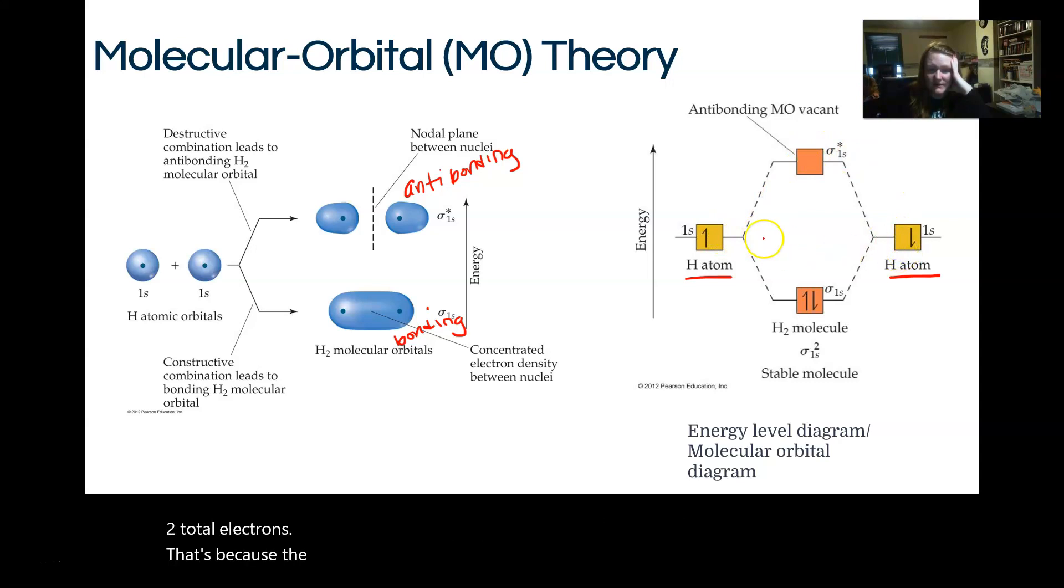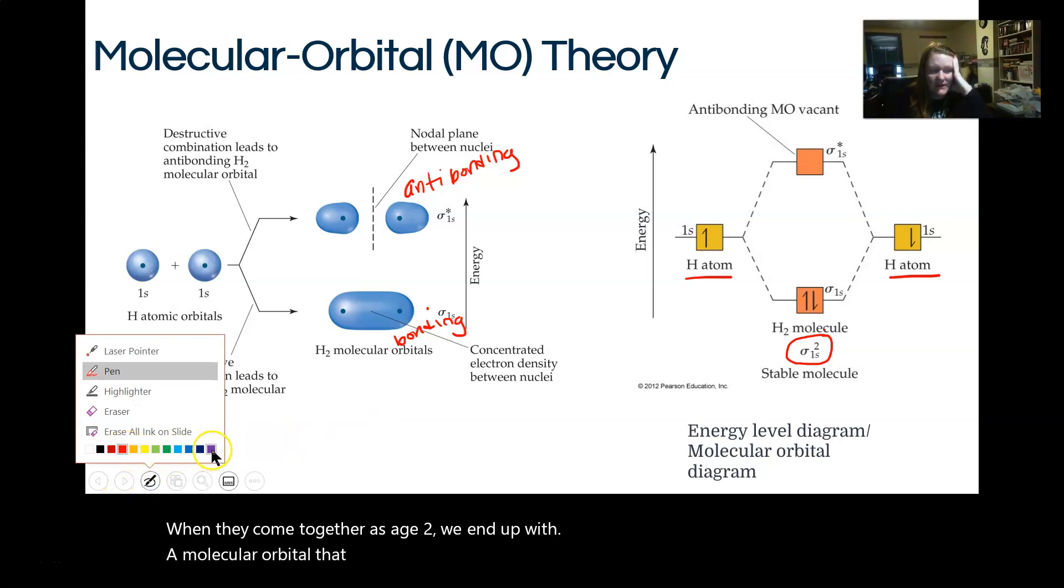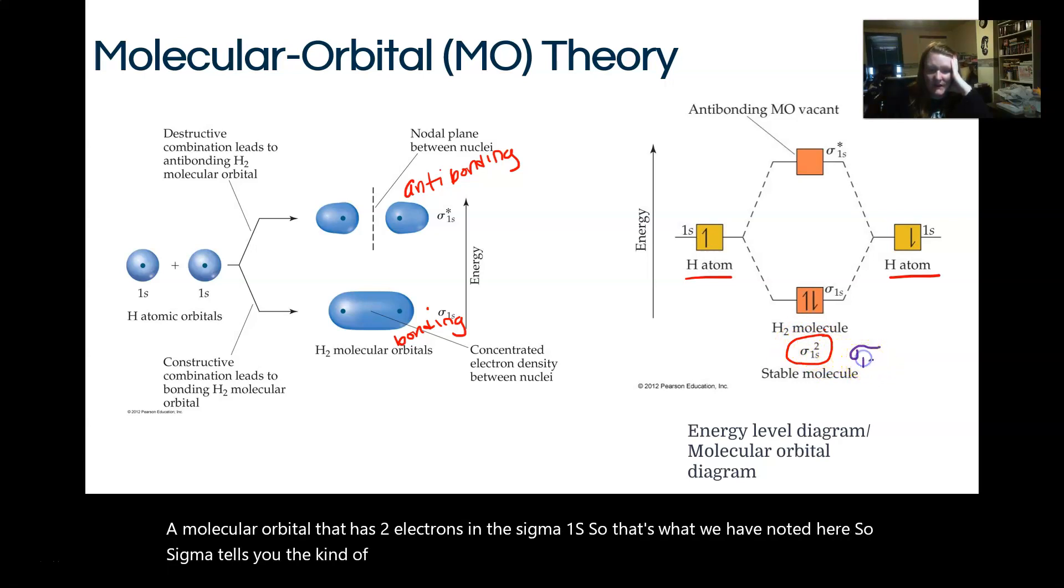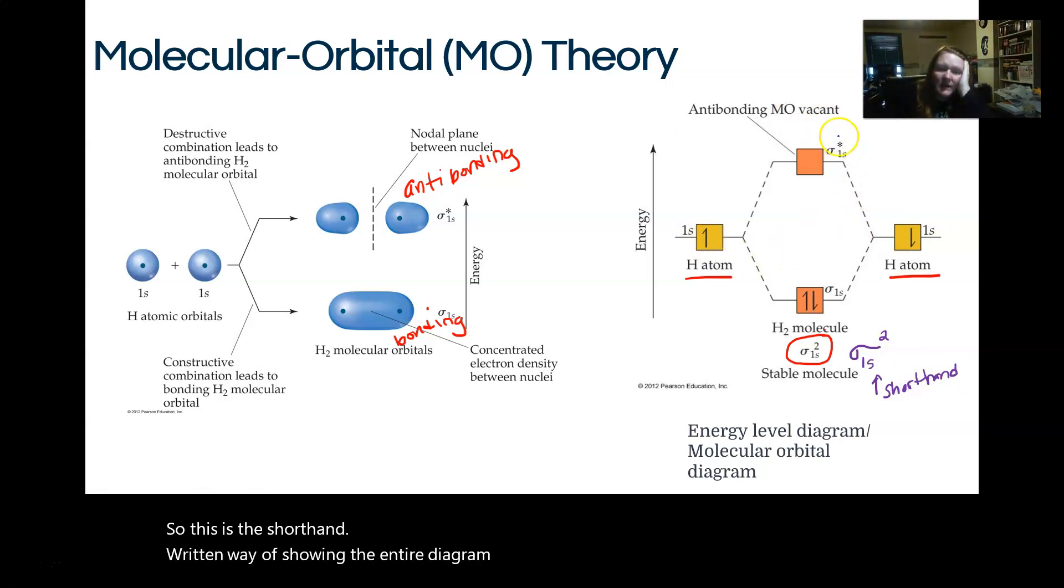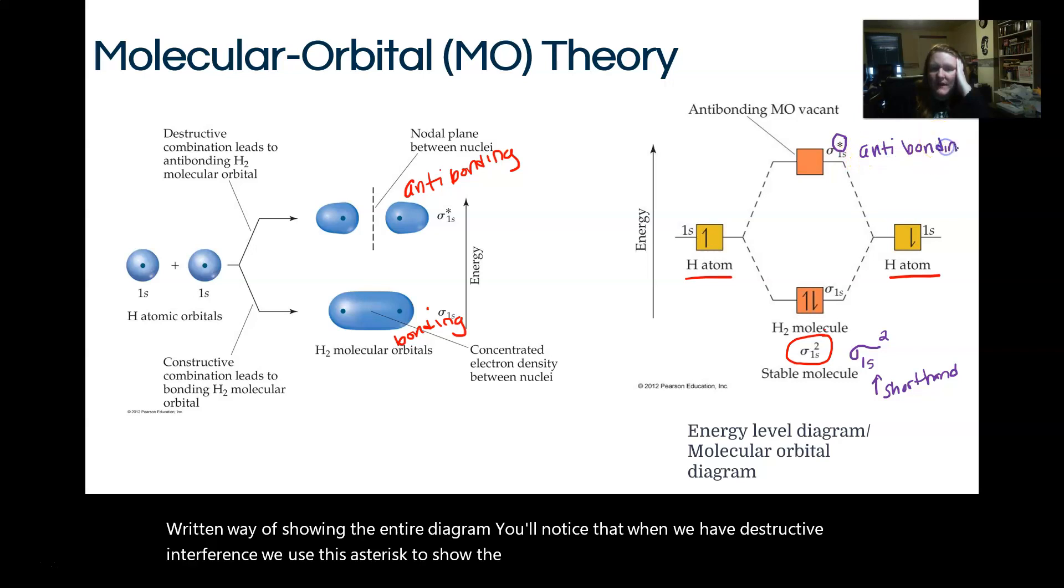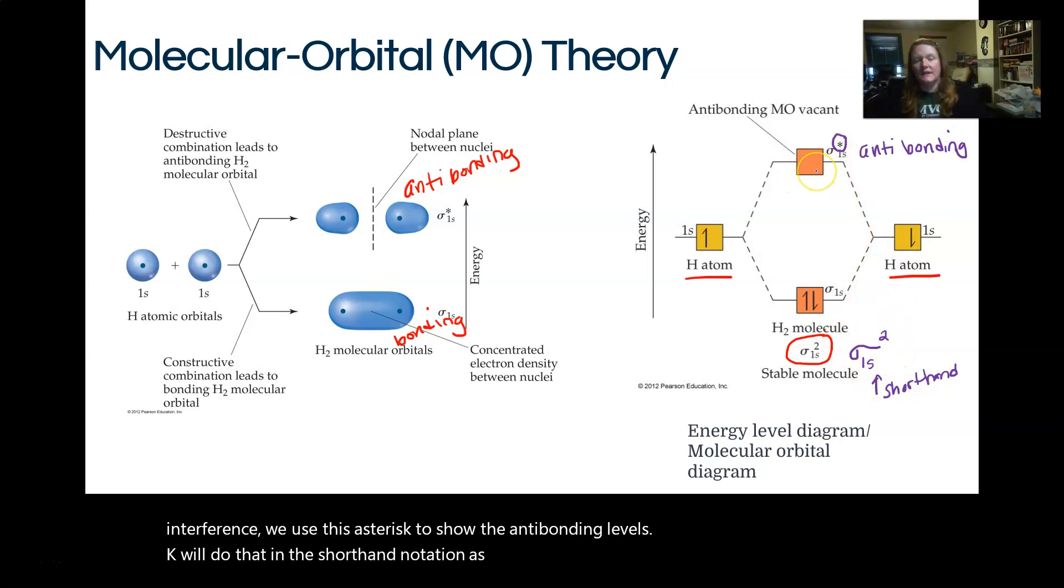So one goes down in energy, that's our constructive interference, and one goes up in energy. Each of these boxes can still hold two total electrons. That's because the ones they come from have a space for four. So you could normally fit two in this 1s box, and two in the 2s box. When they come together as H2, we end up with a molecular orbital that has two electrons in the sigma 1s. So sigma tells you the kind of bond. 1s tells you what atomic orbital it came from. And the superscript of 2 lets us know how many electrons are there. So this is the shorthand written way of showing the entire diagram. You'll notice that when we have destructive interference, we use this asterisk to show the antibonding levels. You'll do that in the shorthand notation as well, if we had any electrons there, which we don't yet.